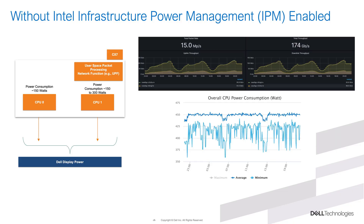In this slide, what we are showing is how the system behaves without IPM enabled. There are two CPUs on the Dell 760 server used to run the demo. On CPU 0, we are deliberately not pushing any traffic just to show what the power consumption is — it is about 150 watts. CPU 1 is where all the user plane functions process packets, and the power consumption runs up to 300 watts, even with very little throughput.